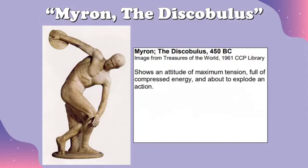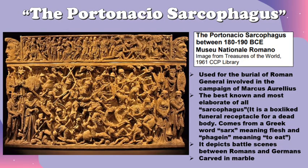The first one is called Myron's Discobolus, made in 450 BC. This shows an attitude of maximum tension, full of compressed energy, and about to explode into action. The second sculpture is called the Porto Nasho Sarcophagus — sarcophagus means tomb. This was made between 180 to 190 BC, used for the burial of a Roman general involved in the campaign of Marcus Aurelius. It is the best-known and most elaborate of all sarcophagi, depicting battle scenes between Romans and Germans, carved using marble.